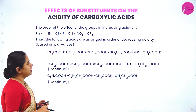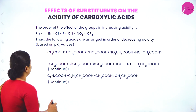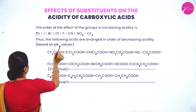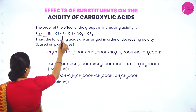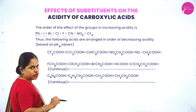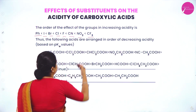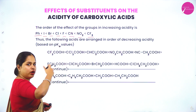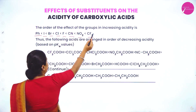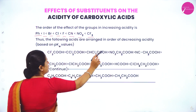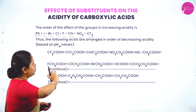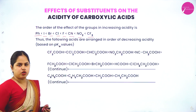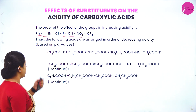The order of groups in increasing acidity is: phenyl (least acidic), then halogens in order I, Br, Cl, F, then cyano (CN), then nitro, then CF₃. Phenyl and the halogens are comparatively electron donating, while nitro and CF₃ are electron withdrawing. If nitro or cyano groups are present in your carboxylic acid they will be more acidic.